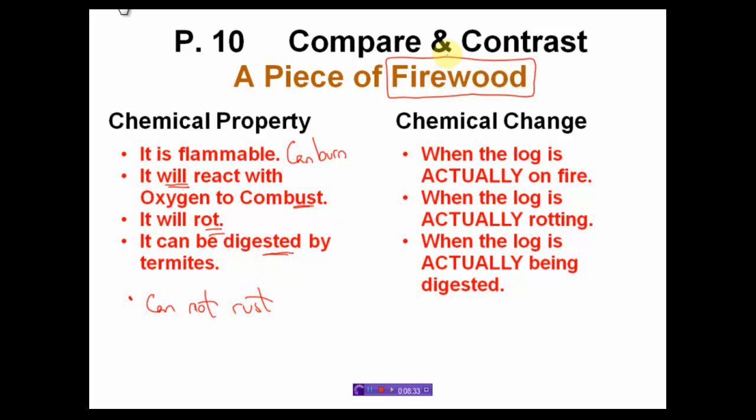Now, on the other hand, what is the actual change? Let's talk about how we're going to change this thing. When the log is actually on fire, it is burning. When the log is actually rotting, that is different than it will rot or it can rot. When the log is actually being digested, it's in the process of it. So a change talks about the change happening. The property describes how it can happen. Not that it is happening. Just definitely a night and day over here of something that can happen or something that is happening.